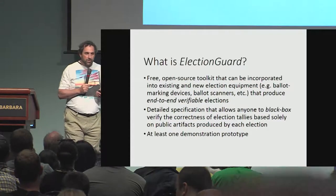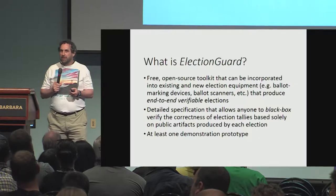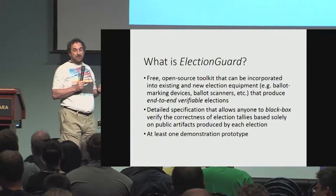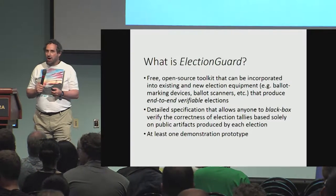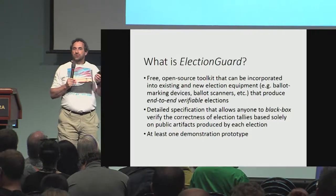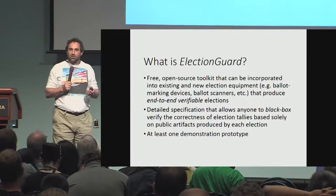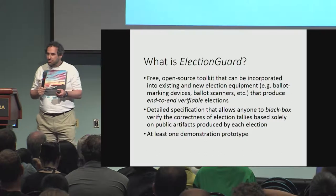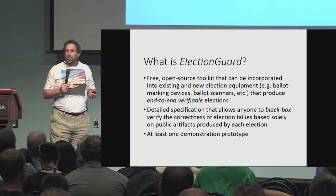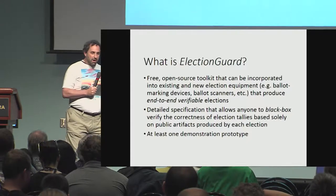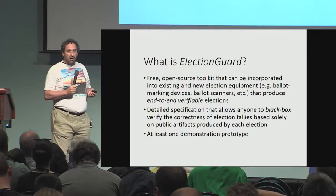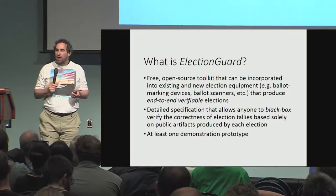What we're doing in particular is we are building a free open source toolkit. It's going to be released next month on GitHub, at least the first version. It will allow vendors to take this code and build cryptographically verifiable, end-to-end verifiable elections. We are releasing a detailed specification that will allow anyone to look at exactly what's going on, do black-box verification of the artifacts of an election, and make sure it's all right. We've already built one prototype to show how this can be done.